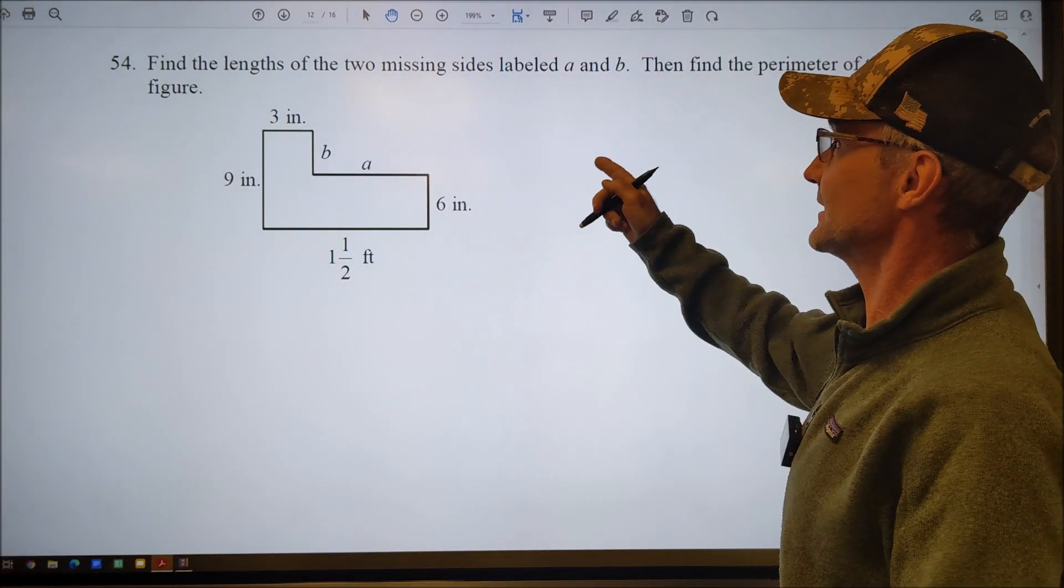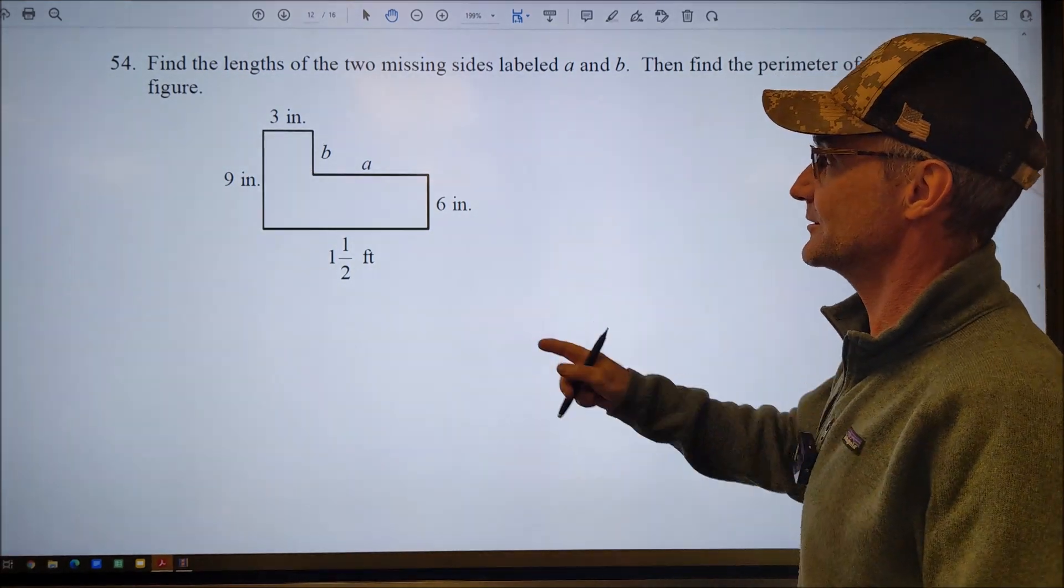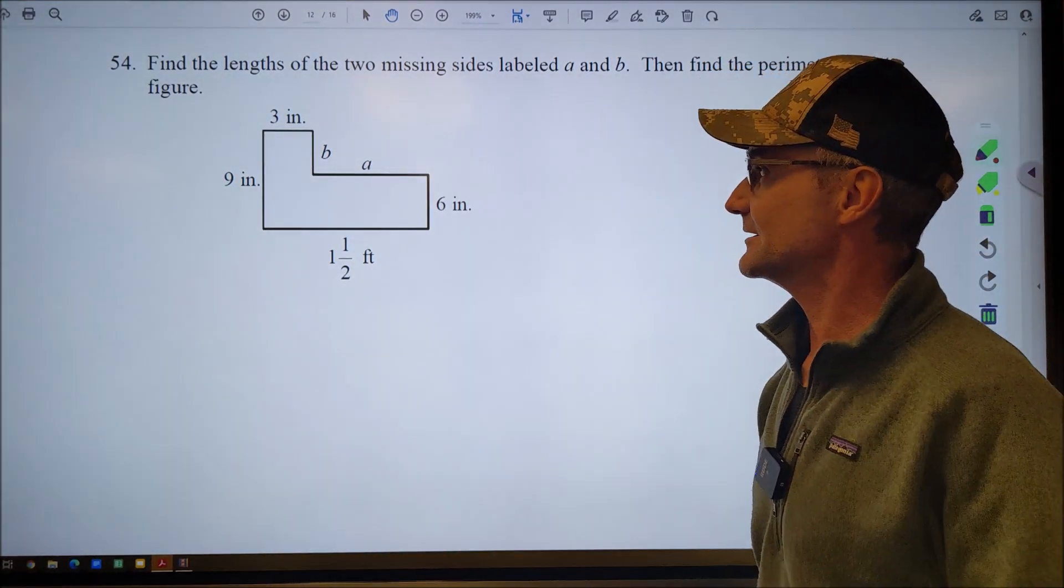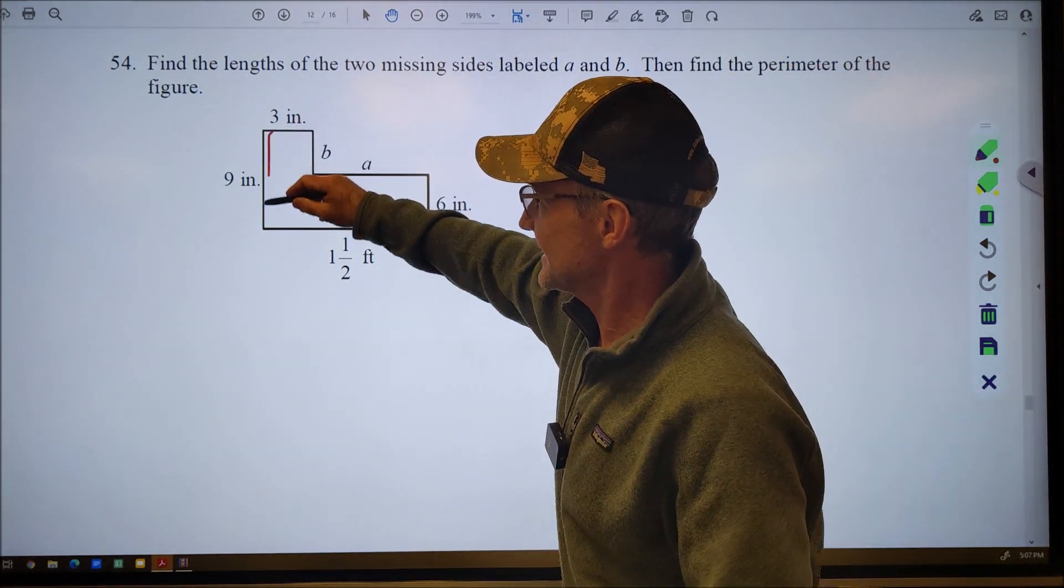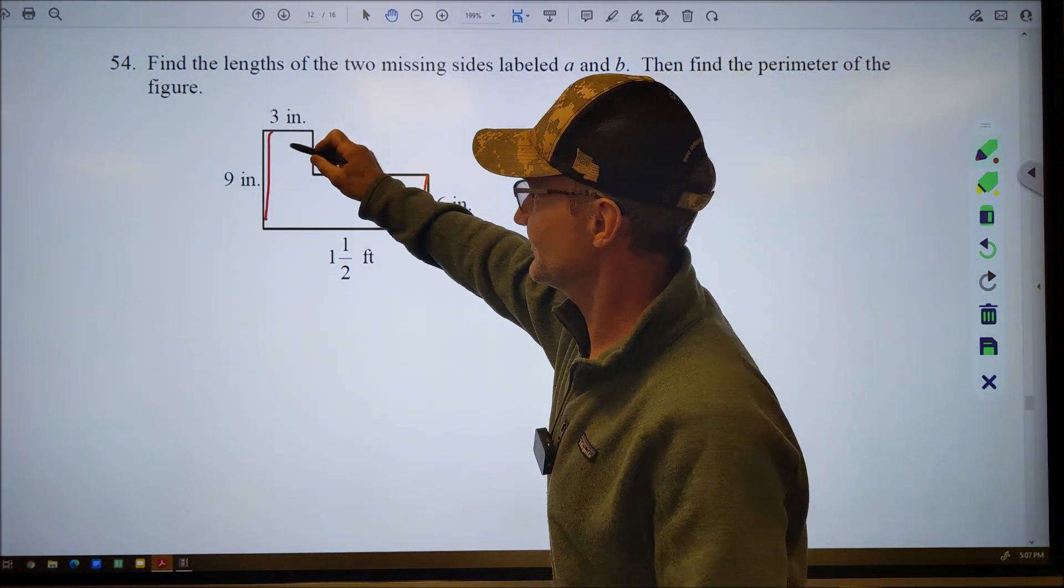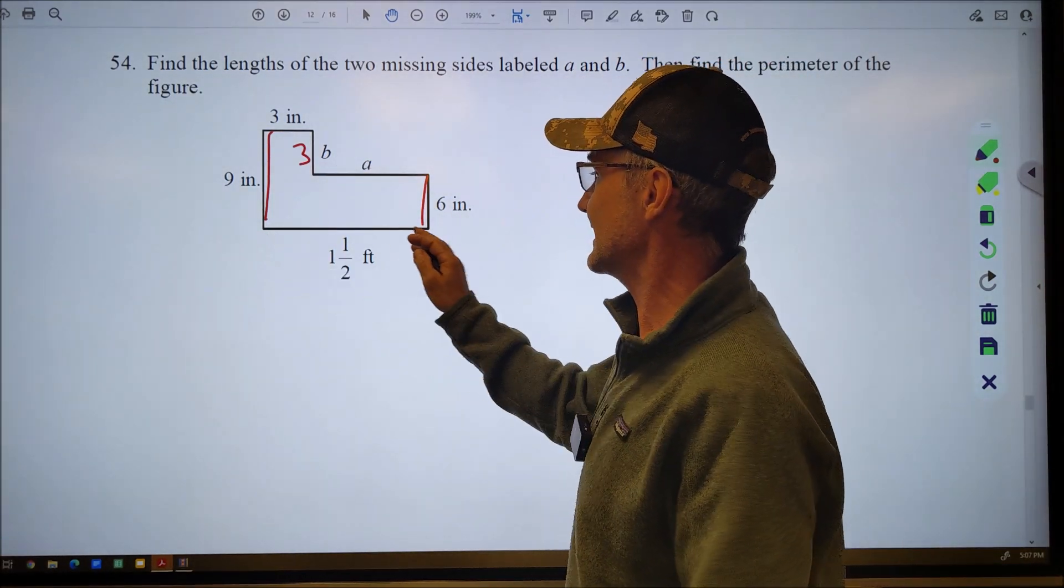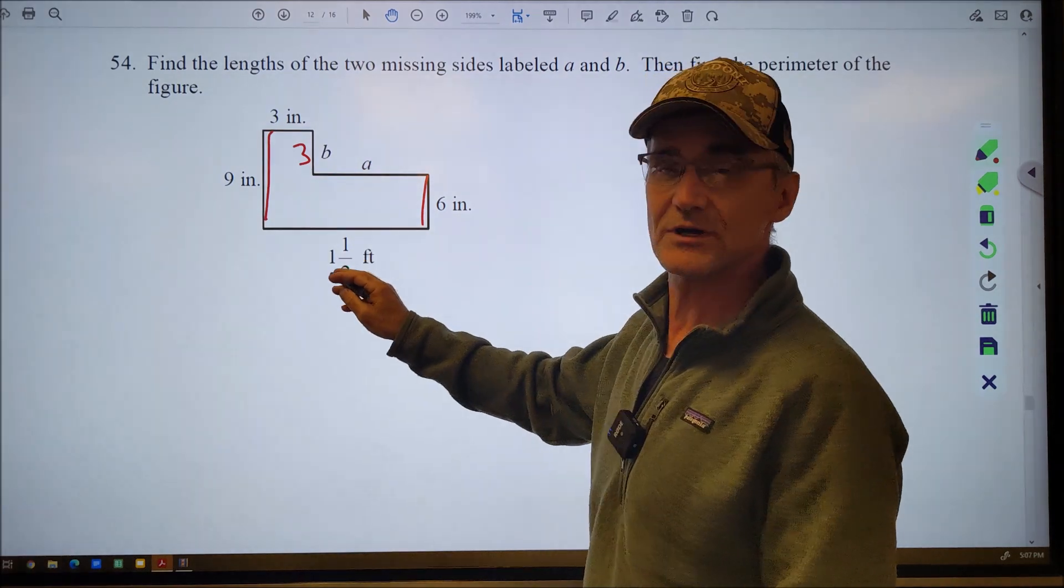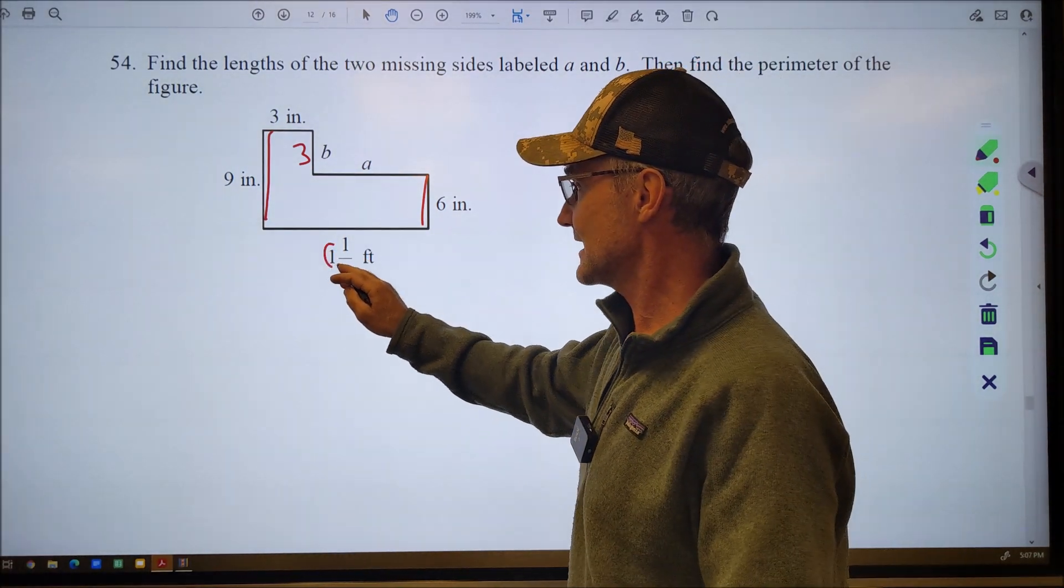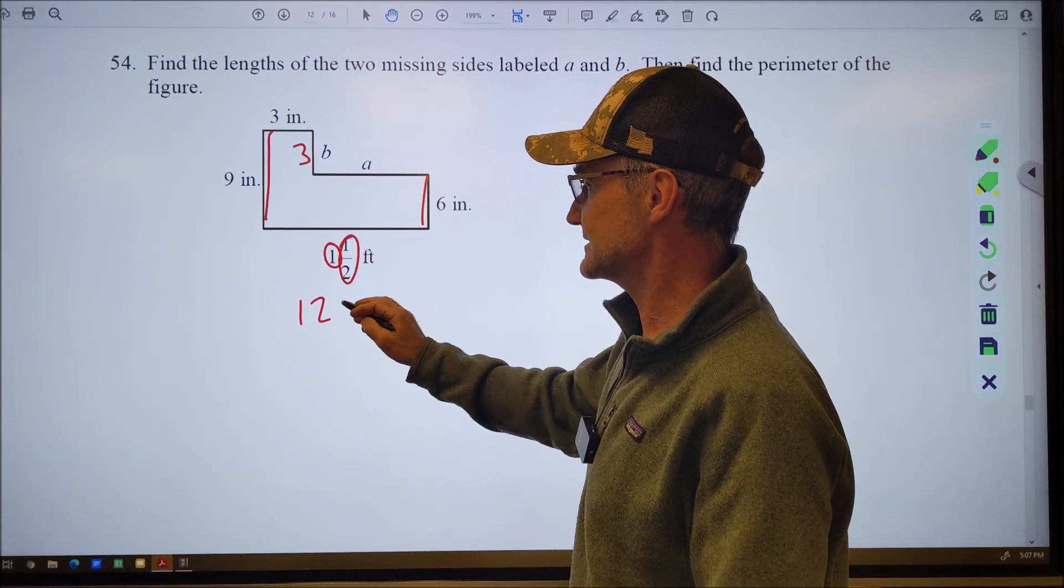Number 54, find the length of the missing pieces A and B and then find the perimeter. Perimeter is the length of the line all the way around the outside. This is nine. This is six. Nine minus six is three. So that side is three. This is one and a half feet. And that's three inches. So 12 inches to the foot. So that one part would be 12. That half foot would be six. So I got 18 inches here.